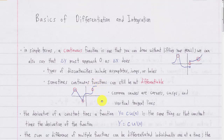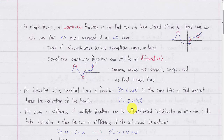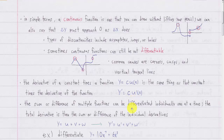Now let's look at some properties of differentiation. The derivative of a constant times a function is the same as the constant times the derivative of the function — when you're differentiating a function, you can ignore the constant coefficient in front of it. And if we have two functions added or subtracted from each other — or more than two — you can differentiate each function individually and then add them all up at the end.